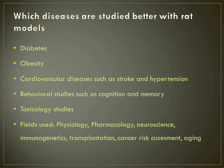Disorders studied better with rat models include diabetes mellitus, obesity, cardiovascular diseases such as stroke and hypertension, behavioral studies such as cognition and memory, and toxicology studies. The fields which use rat models are physiology, pharmacology, neuroscience, immunogenetics, transplantation, cancer risk assessment, and studies to study aging.